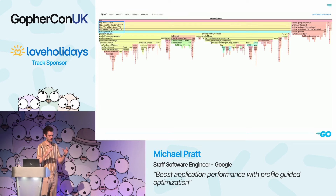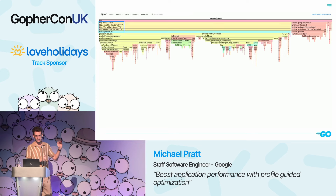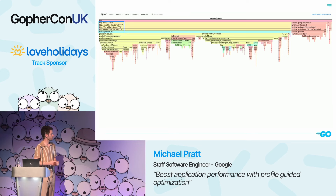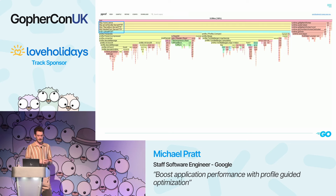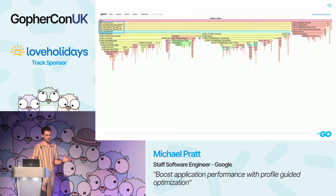In a flame graph, each box is a stack frame with callers above callees. In the upper left we can see a serve method calling a ServeHTTP method, calling two more ServeHTTP methods, and finally the uploadPost function. The width of each box represents the proportion of total CPU time spent in that function or its callees — wider means more time spent.